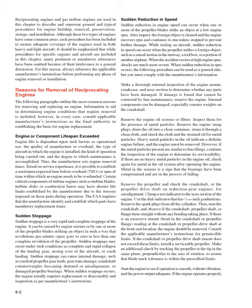Sudden stoppage is a very rapid and complete stoppage of the engine. It can be caused by engine seizure or by one or more of the propeller blades striking an object such that RPM goes to zero in less than one complete revolution of the propeller. Sudden stoppage may occur under conditions such as complete and rapid collapse of the landing gear, nosing over of the aircraft, or crash landing. It can cause internal damage such as cracked propeller gear teeth, gear train damage, crankshaft counterweight detuning or misalignment, or damaged propeller bearings. When sudden stoppage occurs, the engine usually requires replacement or disassembly and inspection per manufacturer's instructions.